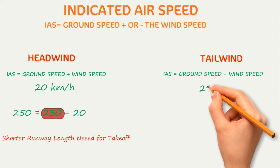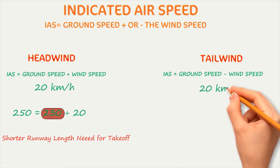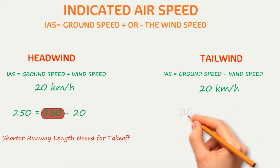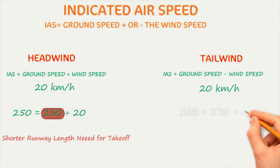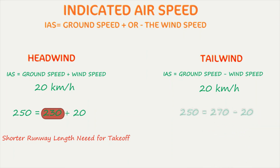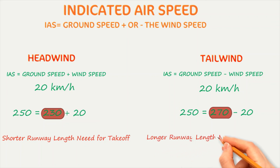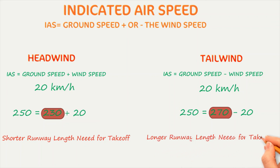Similarly, with a 20 km/h tailwind, this delays the aircraft in generating the required lift for taking off. So effectively, the aircraft has to reach approximately 270 km/h ground speed before lifting off. Hence, if there is tailwind, the aircraft needs a longer length of runway for takeoff.